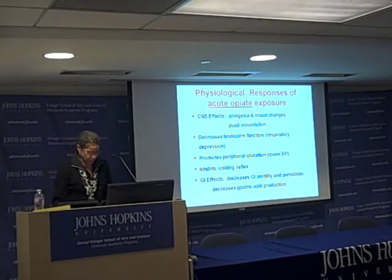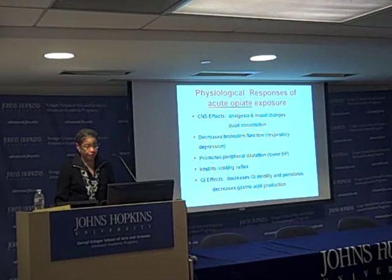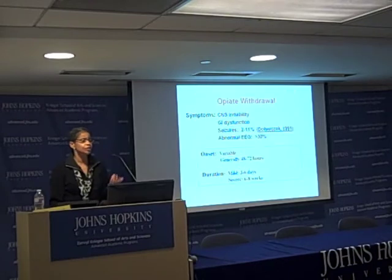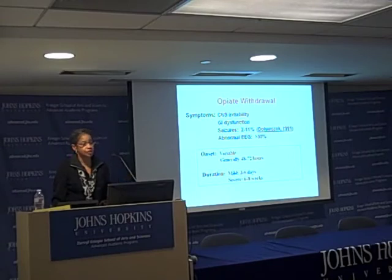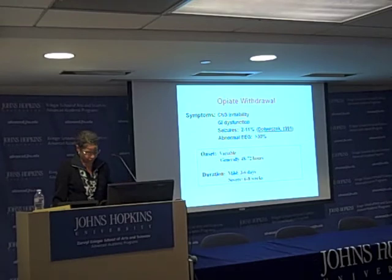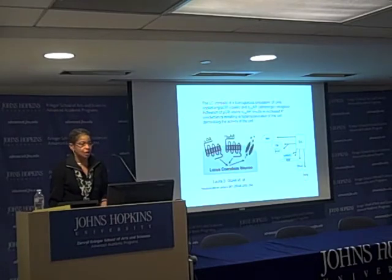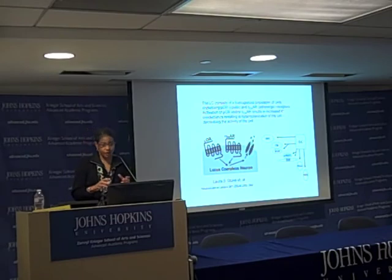With the acute opiate response, the problems arise when the opiate is removed from the mu receptor: you get CNS irritability, GI dysfunction, and in babies, seizures can occur in about 11% of infants not being treated properly, with an abnormal EEG occurring in about 30% of those.